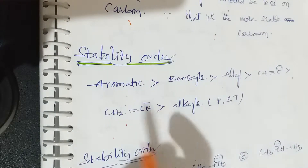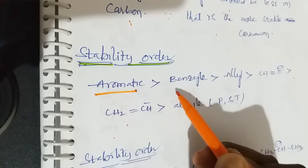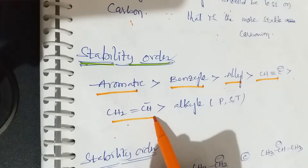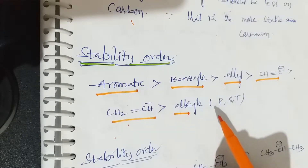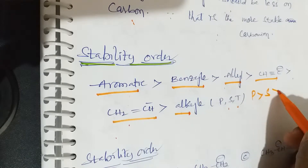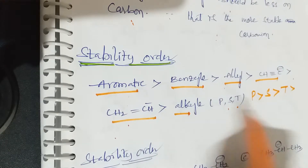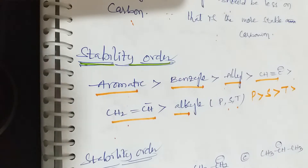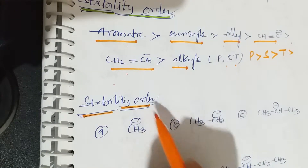Now, what is the stability order? First are aromatic compounds, benzyl and allyl compounds, then alkynes, then alkyl groups. For alkyl groups: primary is greater than secondary, and secondary is greater than tertiary. These are the stability orders of carbanions. The key concept: negative charge should be less on carbon for more stability.